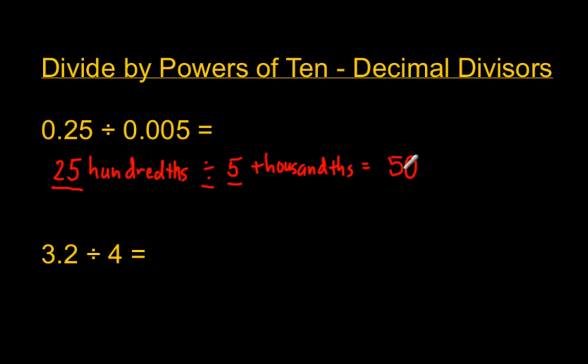So this is telling us that we have five what? Five tens. And the answer to that is 50. So that's the answer to this problem. 25 hundredths divided by five thousandths equals 50. There are 50 five-thousandths in 25 hundredths.